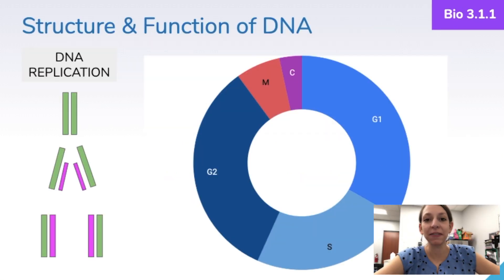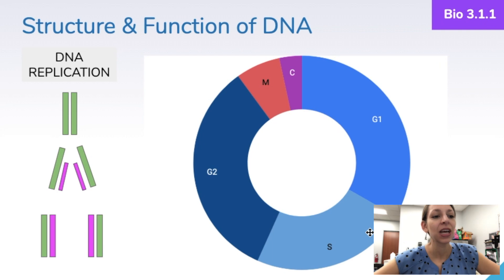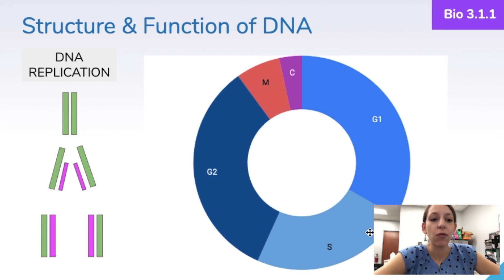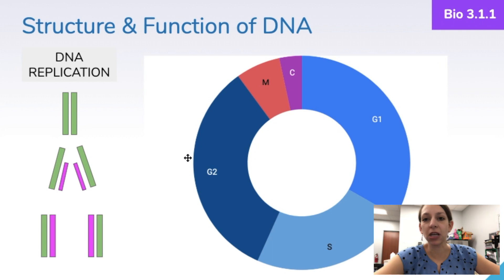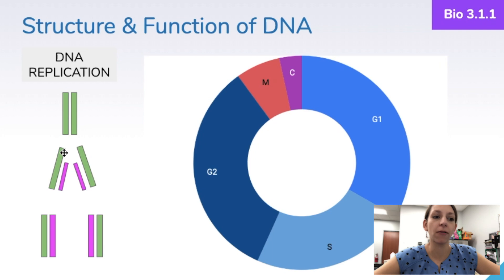Replication occurs in a specific stage of the cell cycle — S phase — and allows daughter cells to have an exact copy of DNA. DNA replication has to occur before a cell can divide by mitosis so that we maintain the same number of chromosomes in the daughter cells as in the parent cells. DNA replication is what we call semi-conservative, meaning the DNA is split apart and a new strand is built off the old template on each side. We end up with two new strands, each containing one original strand and one brand new strand built from new nucleotides.